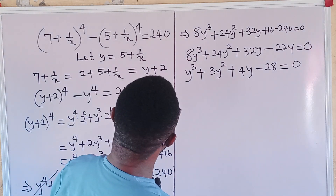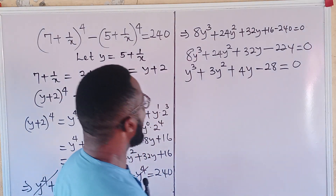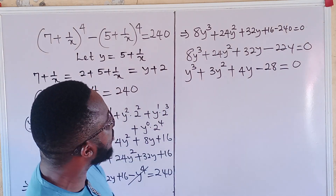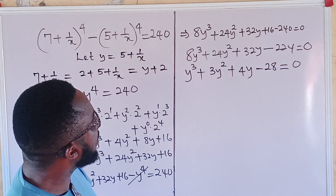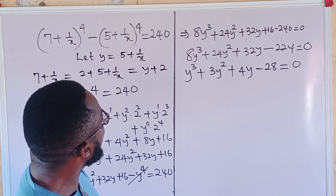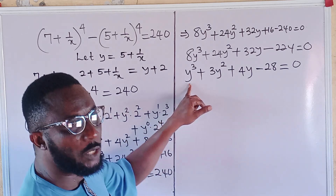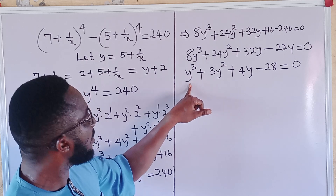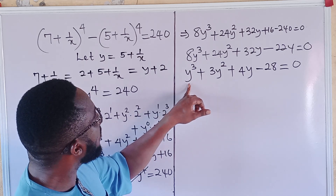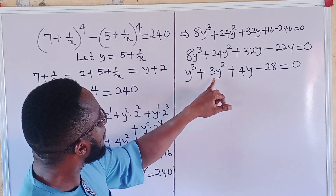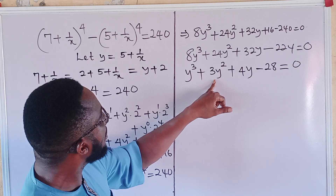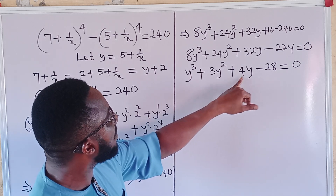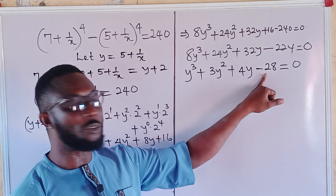If we try f(1) — plugging y = 1 into the expression — we get: 1 cubed plus 3 times 1 plus 4 plus 4 minus 28, which gives 8 minus 28. That cannot equal zero, so y = 1 is not a root.